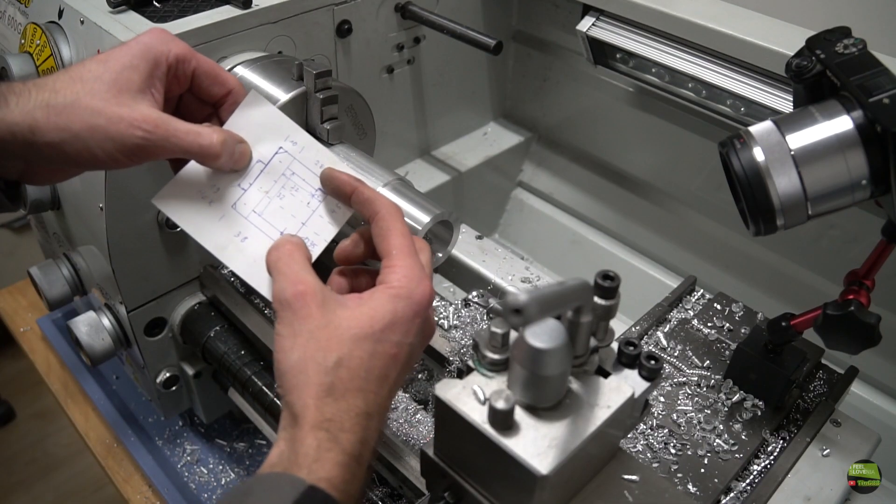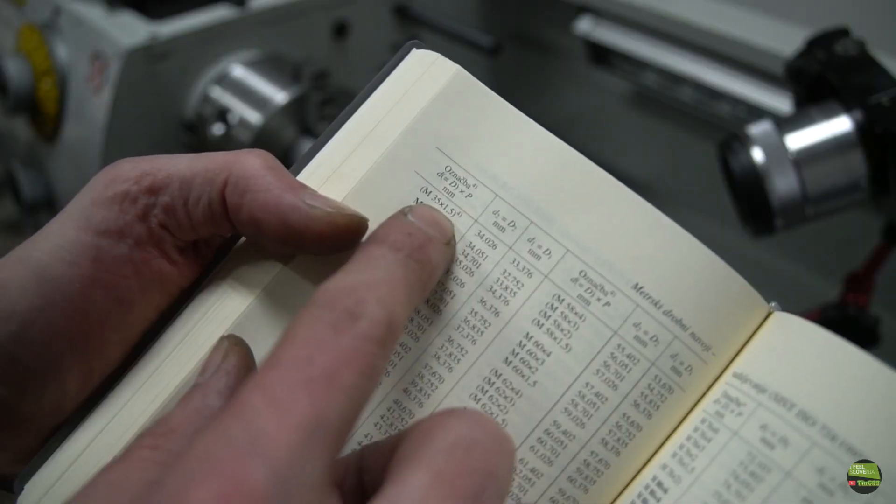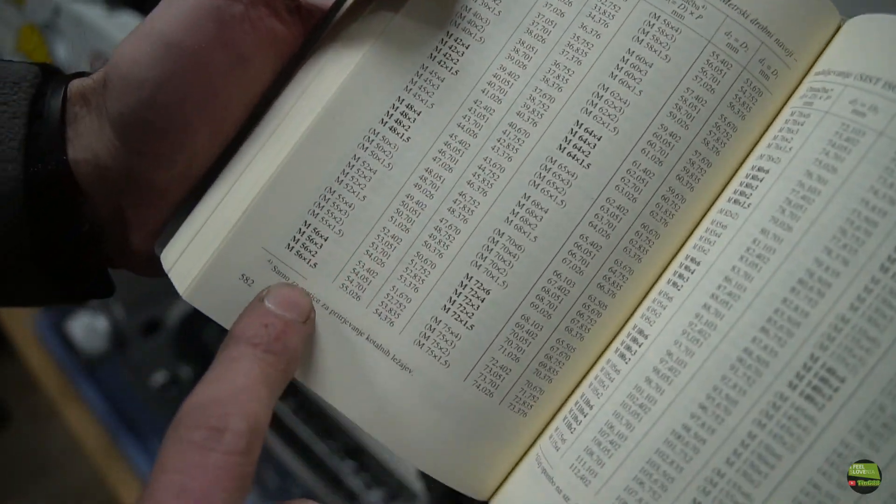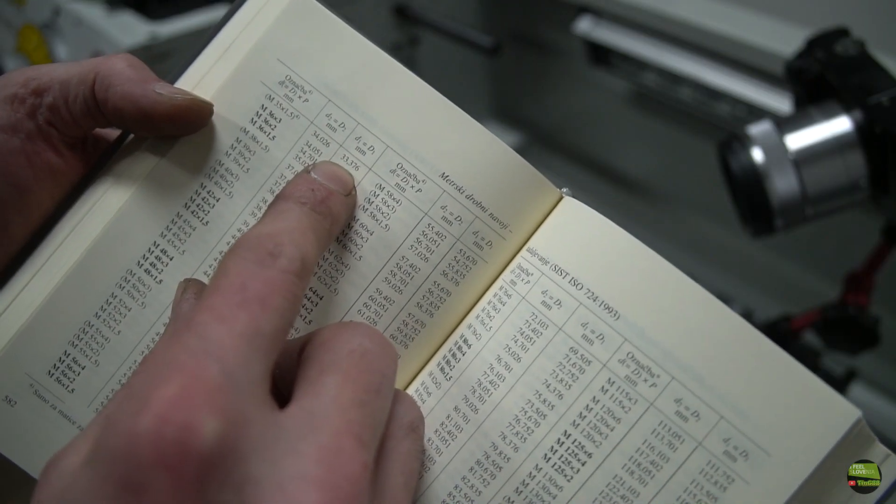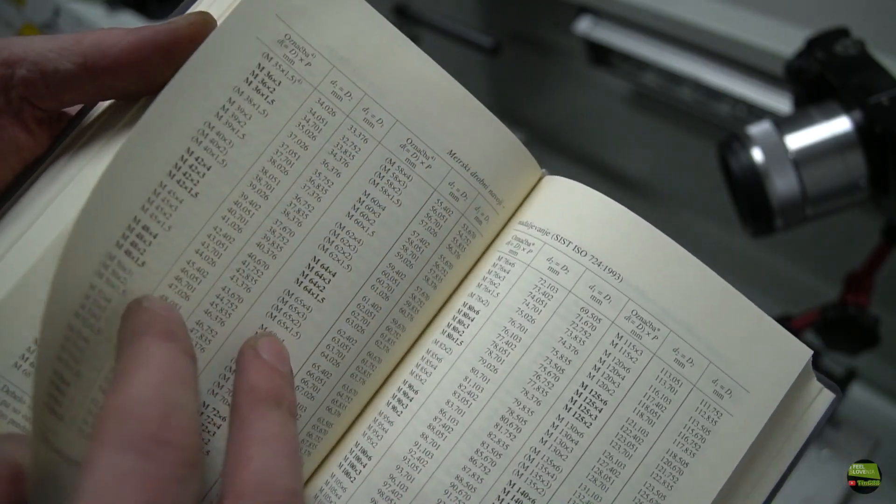Now I need to do about 10mm of thread from the end, and when I checked the mechanic book for the dimension, there was a note for that thread that it should be used for bearing nuts only. Anyway, the dimension I need to make the thread is 33.38mm.